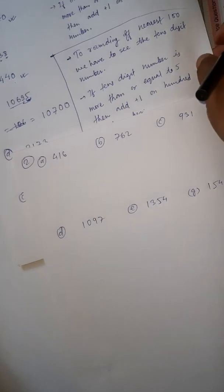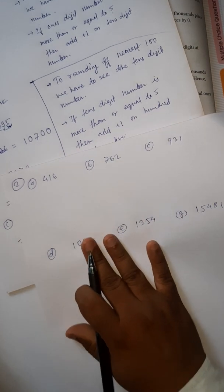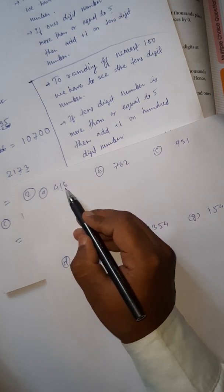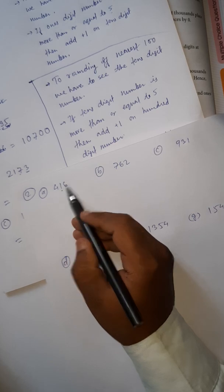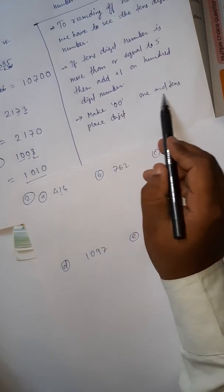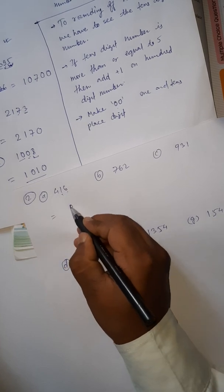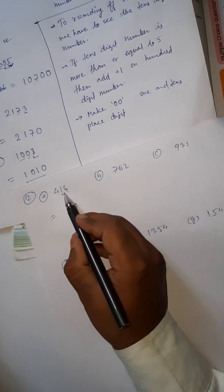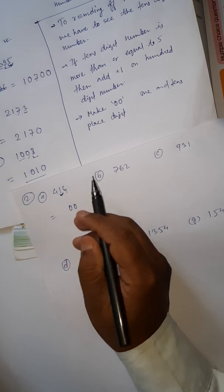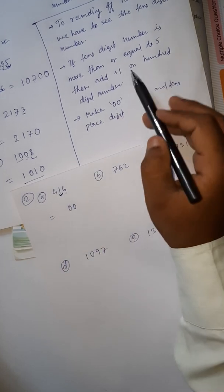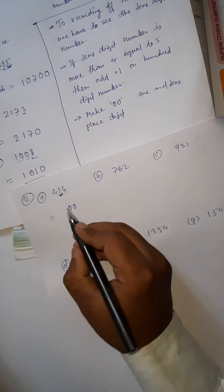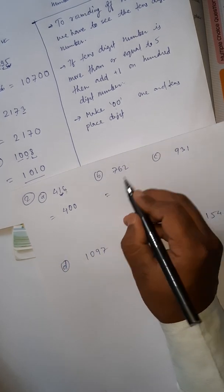For nearest hundred, we have to look at the tens digit number, make the ones and tens digits zero, and check the tens digit. For 416, the tens digit is 1, which is less than five — so don't add anything. The answer is 400.